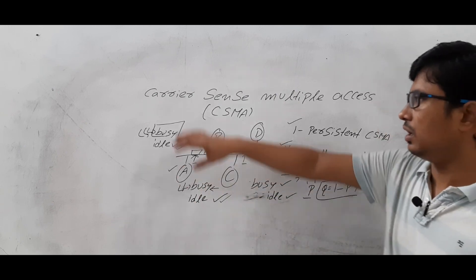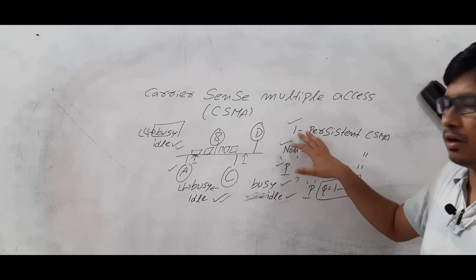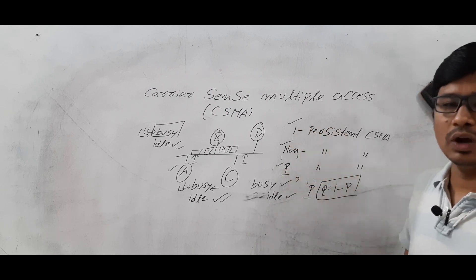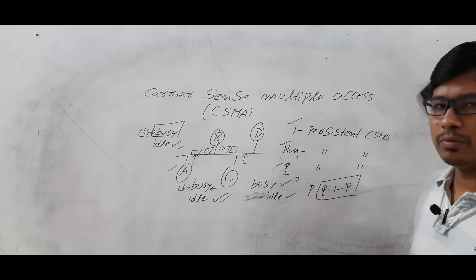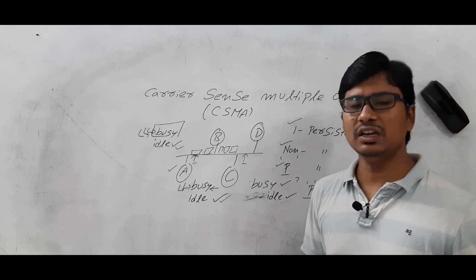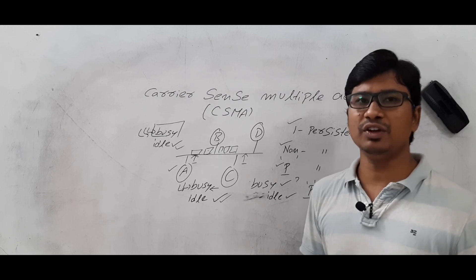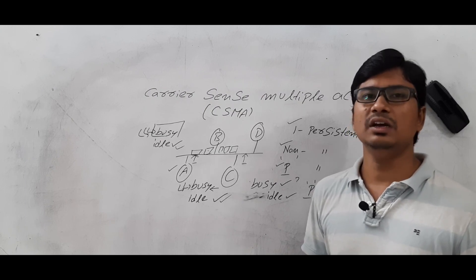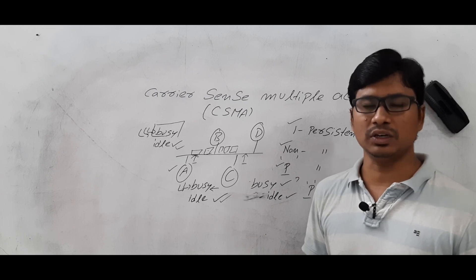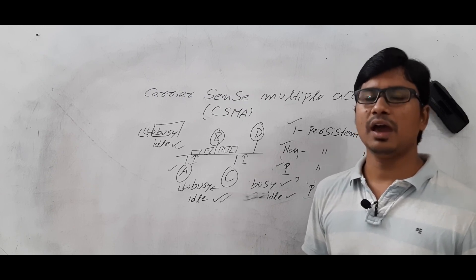I hope you have understood the basic CSMA mechanism and the variations — one persistent CSMA, non-persistent CSMA, and P-persistent CSMA. If you still have any doubts related to this concept, feel free to ask me in the comment section. I will try to clear your doubts in less than 24 hours. Thank you for watching my video. Have a nice day.